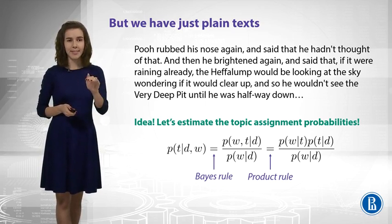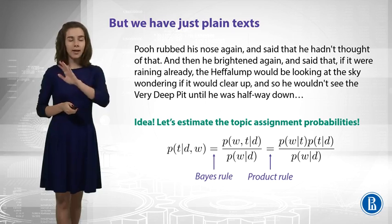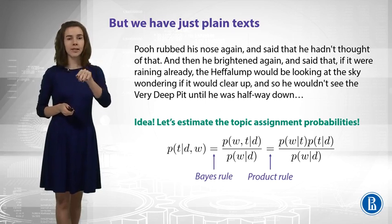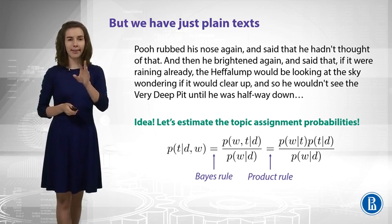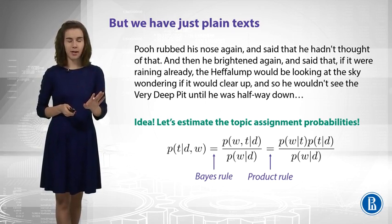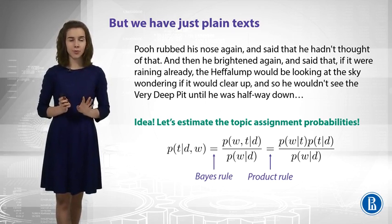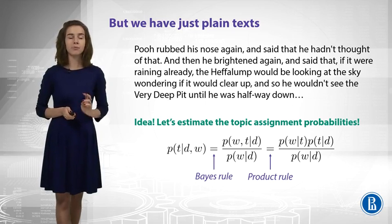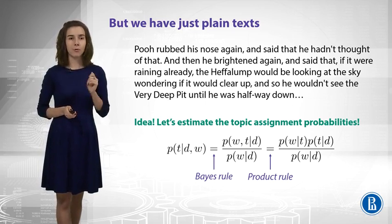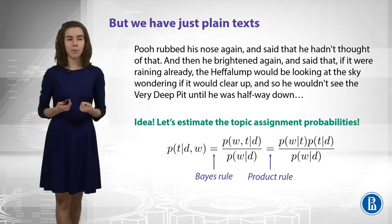To understand this, I just advise you to forget about d in all these formulas, and then everything will be very clear. We just apply these two rules, and we get some estimate for probabilities of our hidden variables, probabilities of topics.